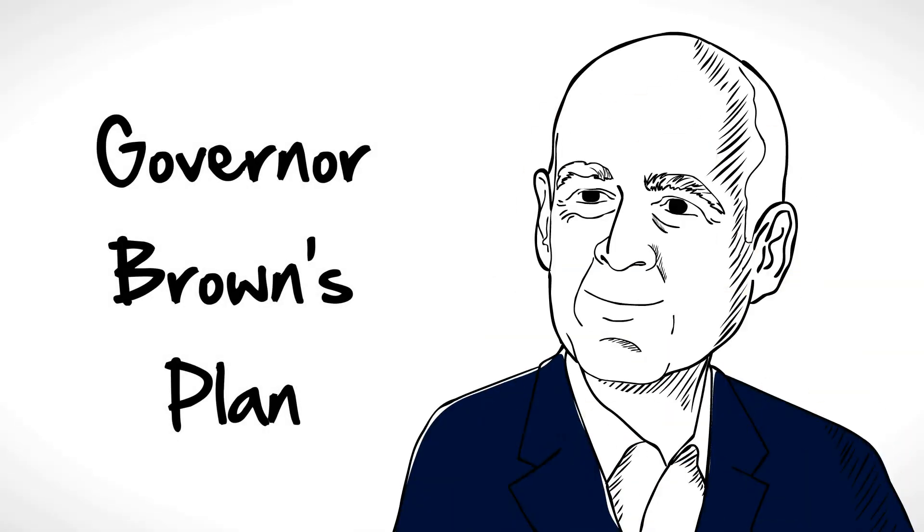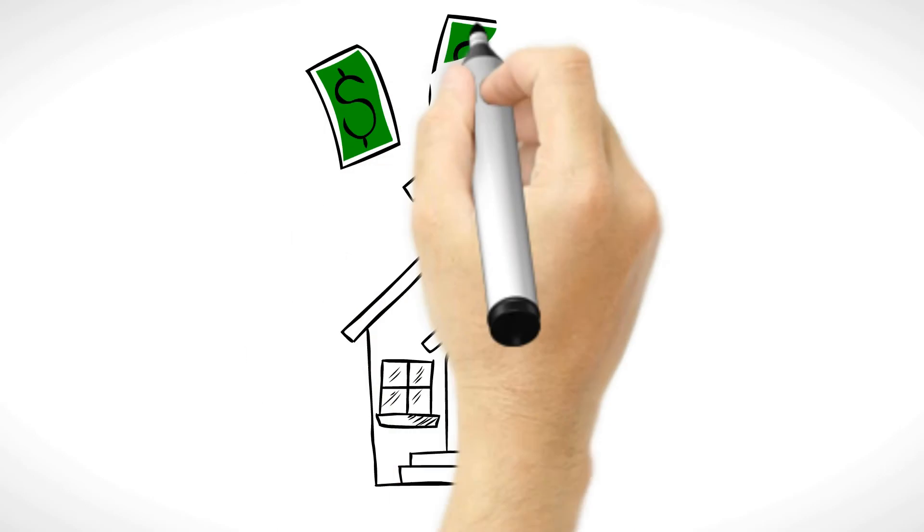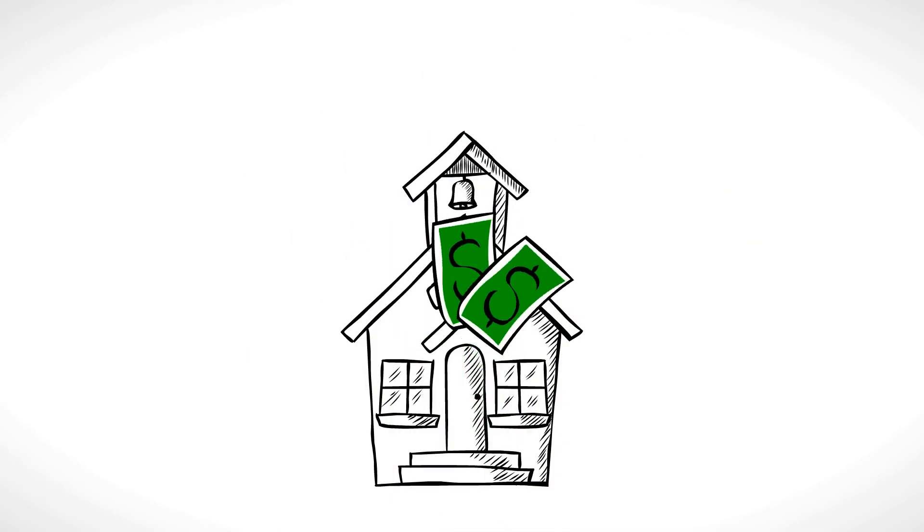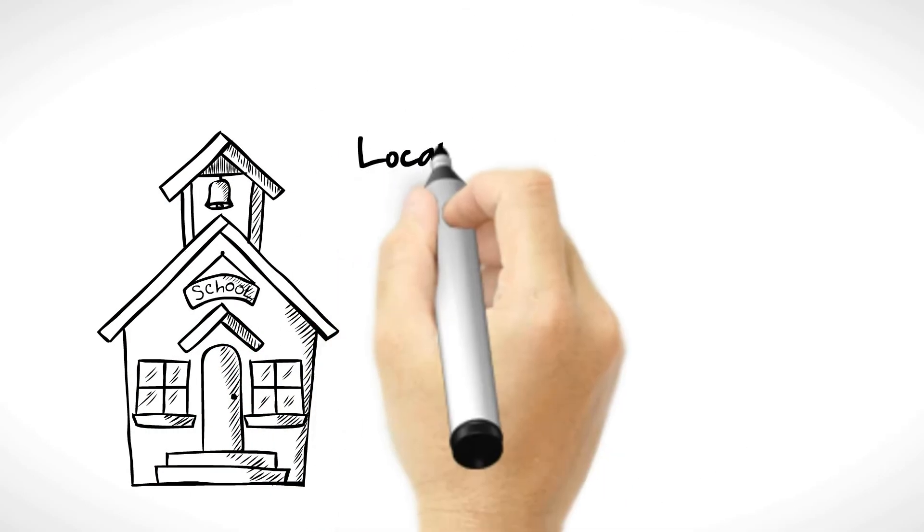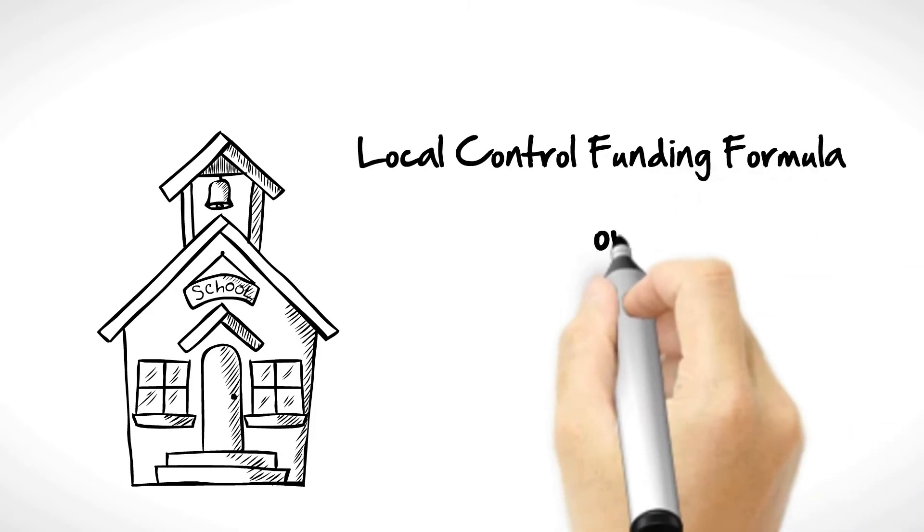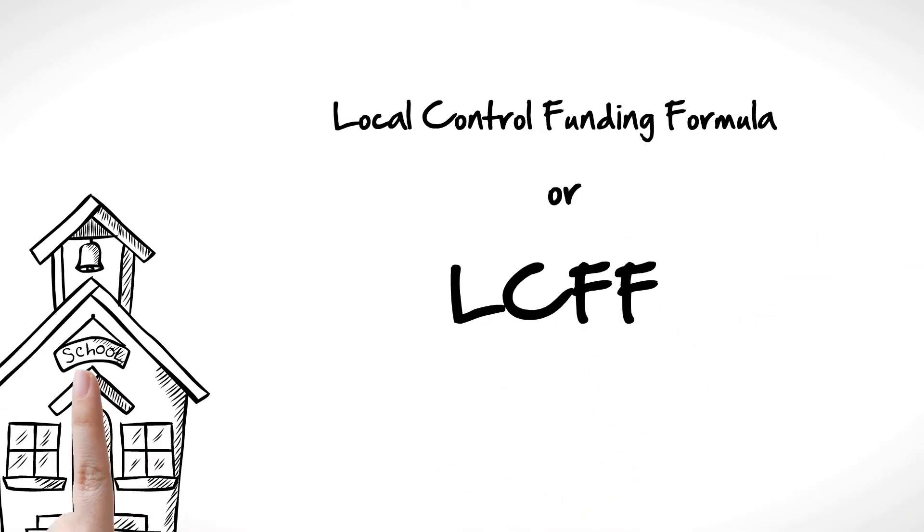The governor has a plan to fix these funding problems. He wants to improve the way we fund schools. The plan is called Local Control Funding Formula, or LCFF. The plan does the following.